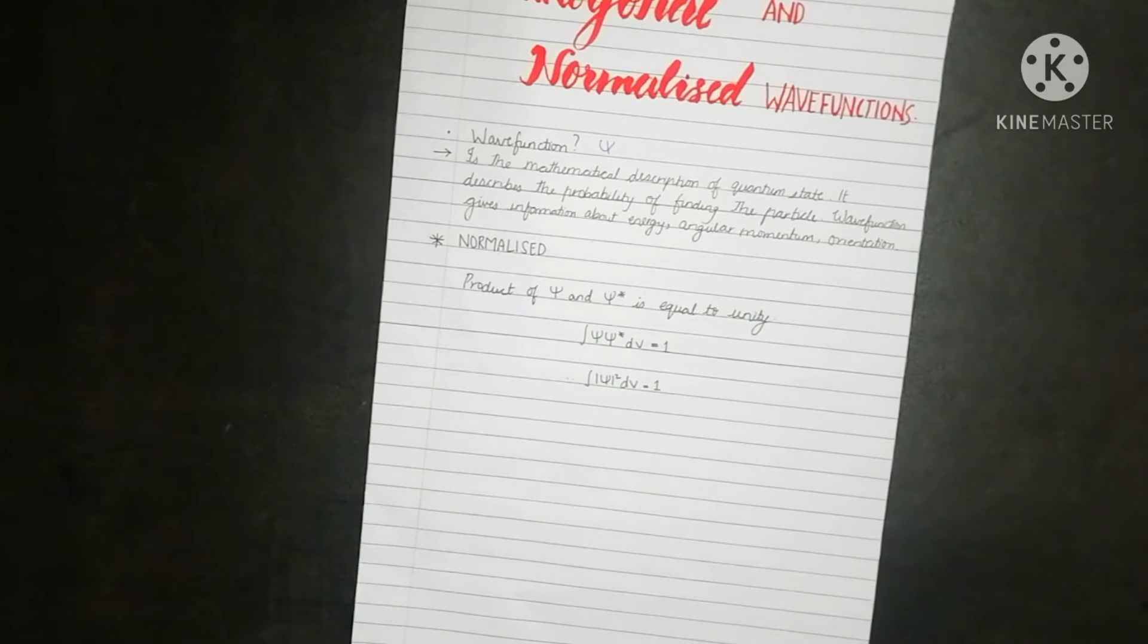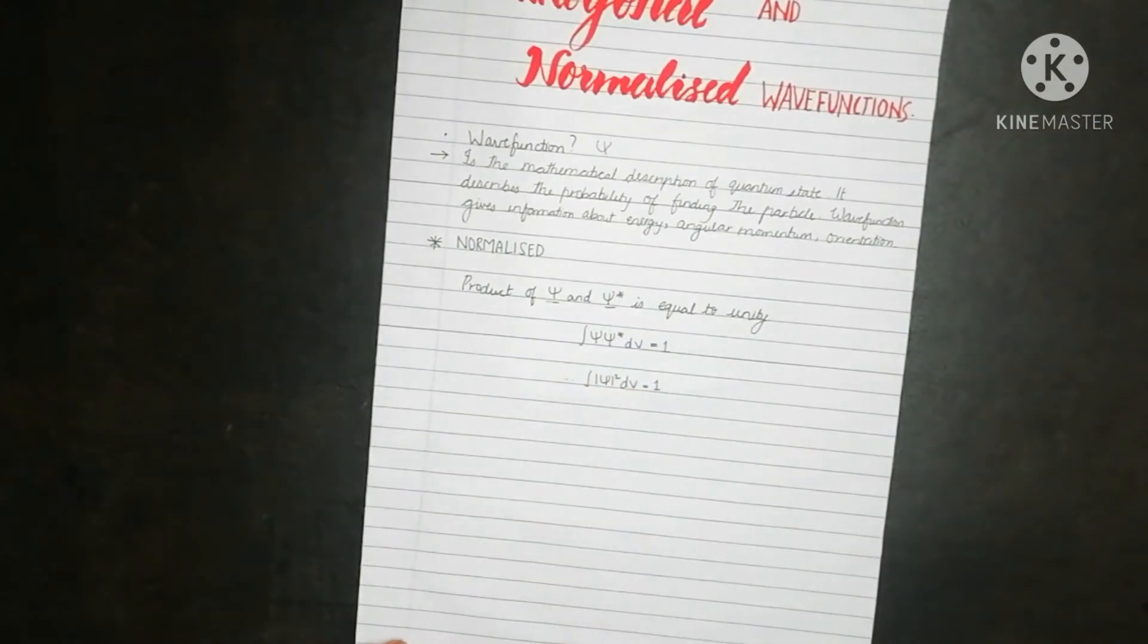Next, we will see what is a normalized wave function. As you know, the product of psi and its complex conjugate gives the probability of finding the particle in the particular space. So now when this product of psi and psi star is equal to unity, then the wave function is said to be normalized.